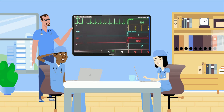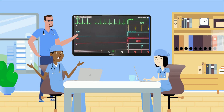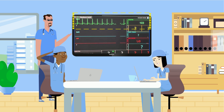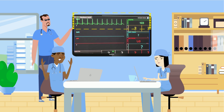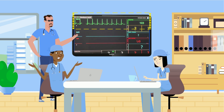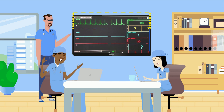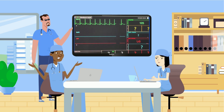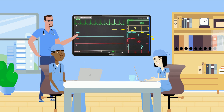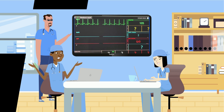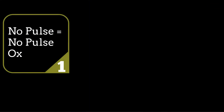What is PEA? It is when you have electrical activity in the heart that generates a heart rate tracing on the ECG monitor — it even gives you a heart rate number. But that electrical heart activity doesn't actually generate a heartbeat that pumps blood, which is felt as a pulse. If there is no pulse, there will be no pulse ox waveform or saturation reading.